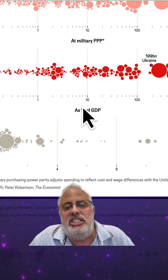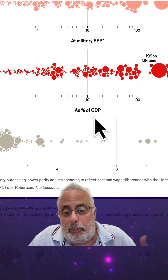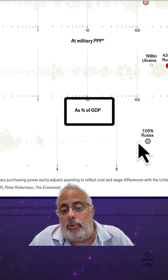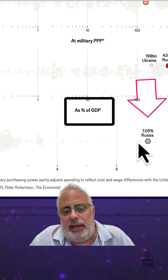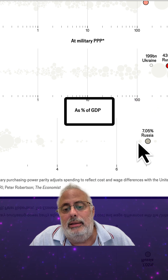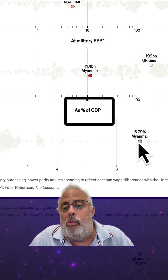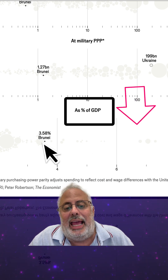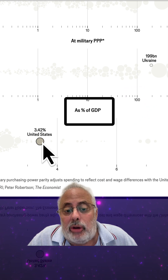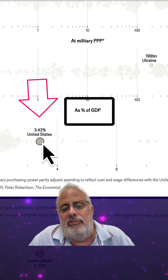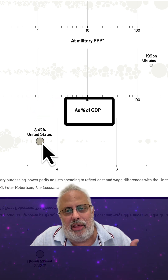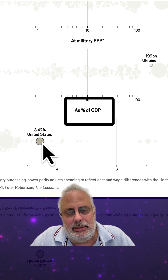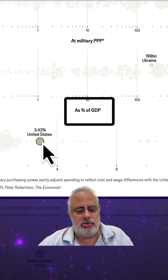If we move over here, we have the GDP. What is the percent of GDP? For example, Russia spent 7.05% of its GDP on military spending, Myanmar 6.79%, and the United States 3.42% of GDP. And then you are teaching math with engagement, with reality. What do you think? I want to hear your opinions.